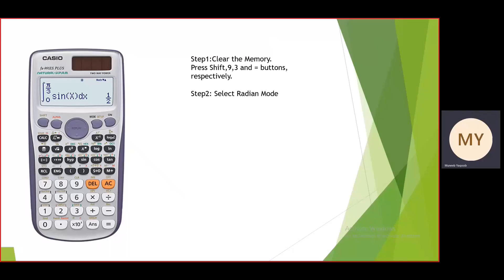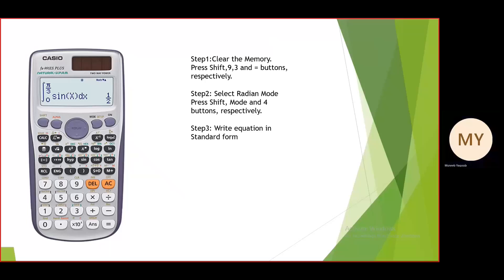To perform step number two, that is to select the radian mode, press the shift button, then press the mode button, and then choose option number four.